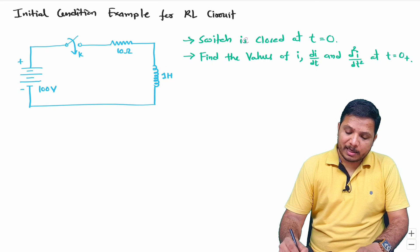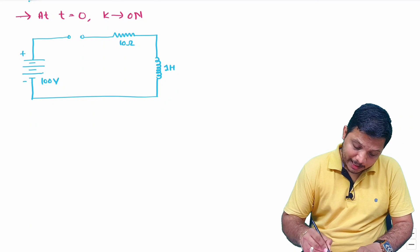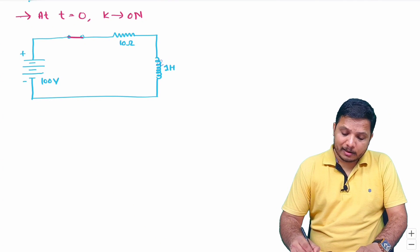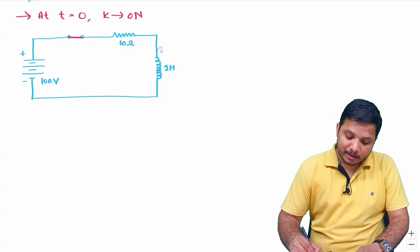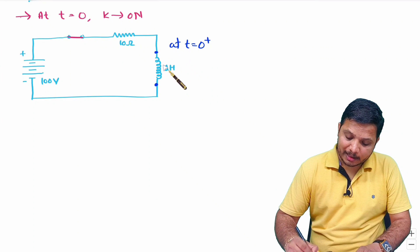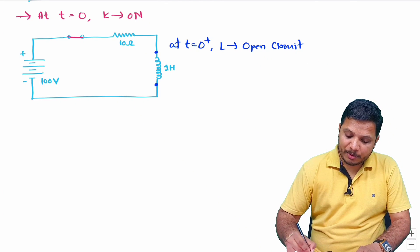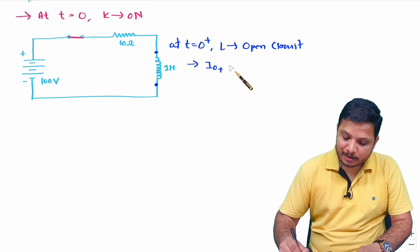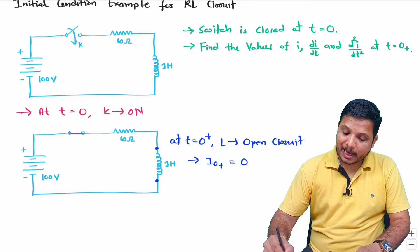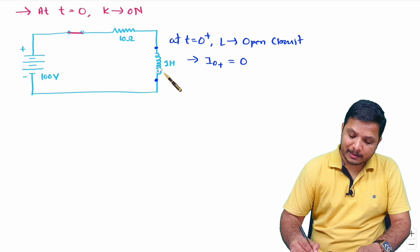When switch k is closed at t equals 0, the inductor acts as an open circuit at t equals 0 plus. As a result, the current i(0+) will be 0. That is our first answer — the initial current is 0, because the inductor is open-circuited initially.